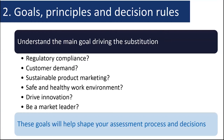The second step in determining the scope of your assessment is to define your goals, articulate any guiding principles of your efforts, and clarify your decision rules. Your goals should reflect why you're doing the assessment in the first place — what is driving you or your organization? Clarifying this will impact many of your subsequent choices. Is it because of regulatory compliance or customer demands? Is it to help your company pursue sustainable product marketing opportunities or to improve the health and safety of the workplace? Is it an innovation strategy that might unlock new markets? Understanding your organization's goals will help you shape the assessment process and the decisions you make at every turn.